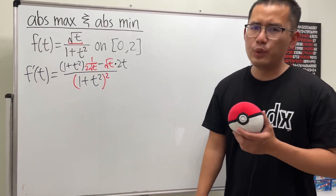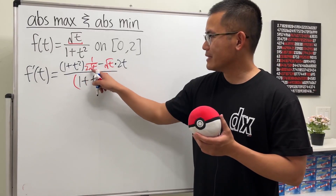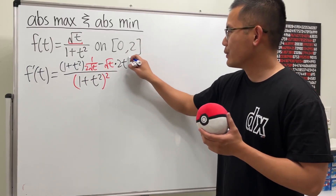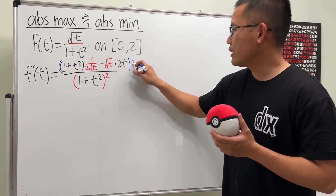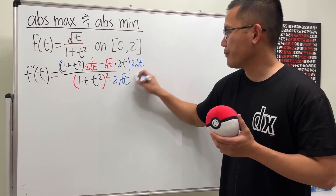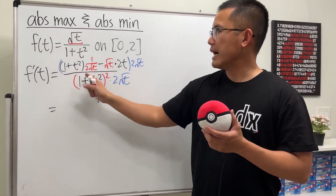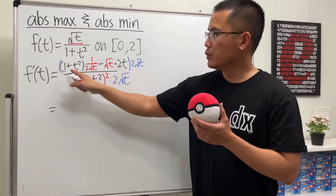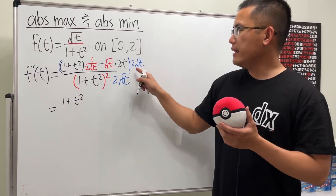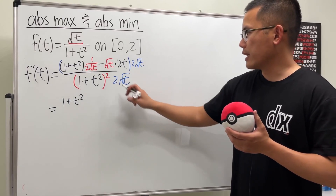Before we set this equal to 0, let's simplify this a little bit. We see that we have a small fraction here, so let's multiply the top and bottom by 2 square root of t, and of course we do it on the bottom as well. Taking this times that, they will cancel, so we will just have 1 plus t squared.